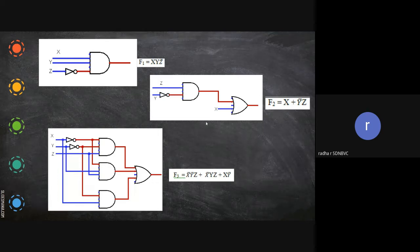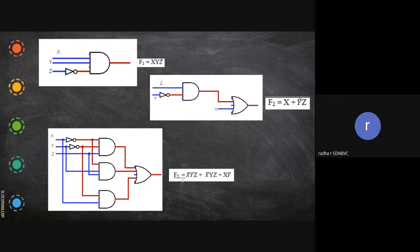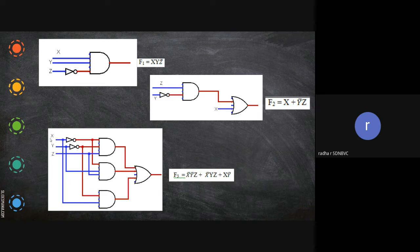Now the next equation: x̄ȳz and so on. Here we need, actually not two OR gates, here you need three AND gates: one, two, three. And then this can be given as one input, this is another input, this is another input for an OR gate. If you see that x̄, now we have taken x.